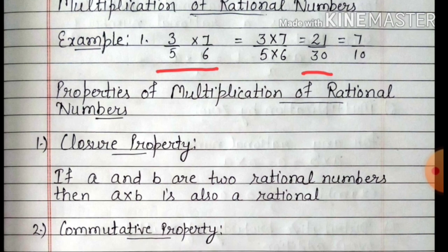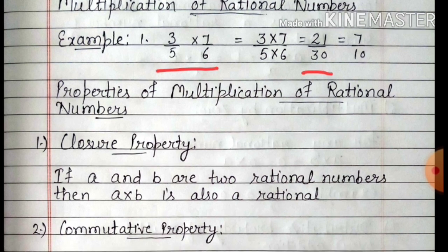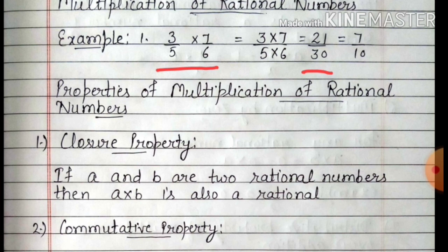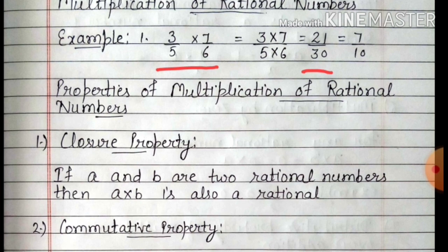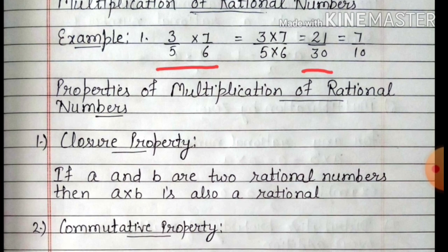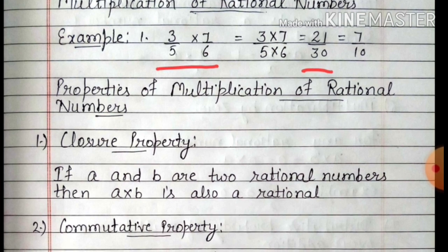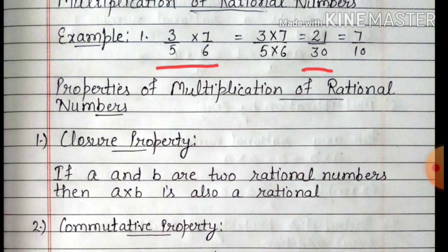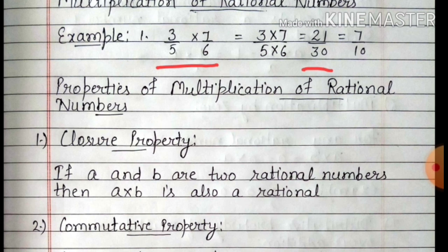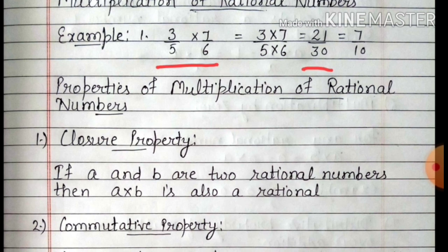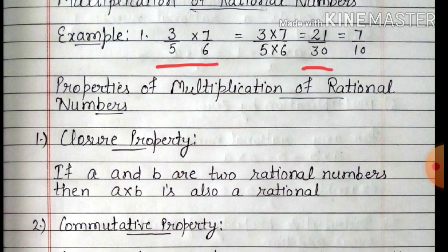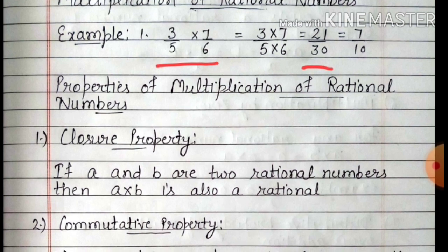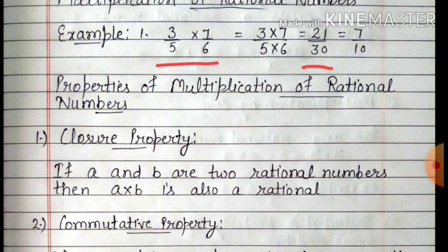अब इन्हें हम cancel कर सकते हैं 3 के table पर. 3×7=21 और 3×10=30. तो answer क्या आएगा? 7 upon 10. तो इस तरह से आप rational numbers को multiply कर सकते हों.